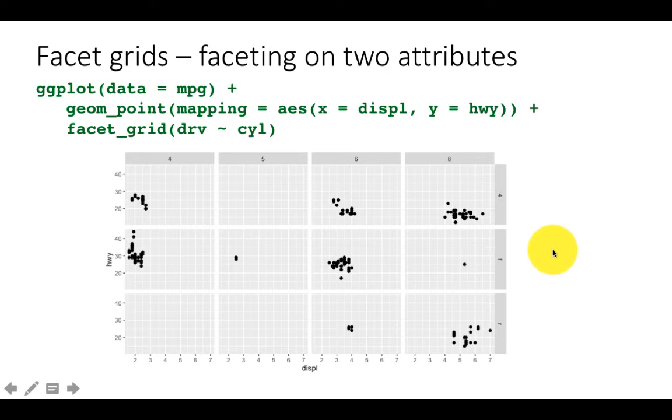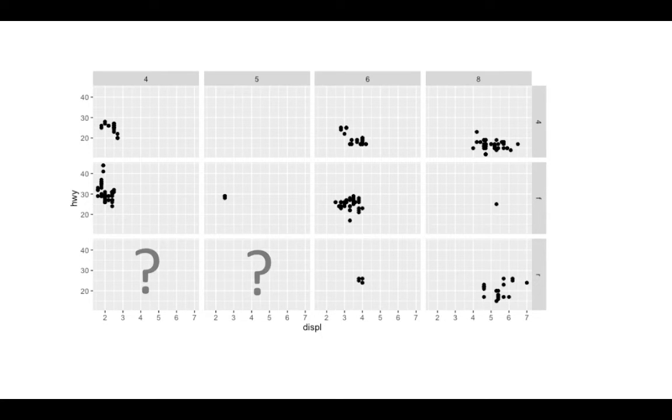It's also very powerful. Now, the difference between doing a facet wrap with two variables and a facet grid is that the facet grid is a lot easier to read. So for example, this graph is for four-cylinder four-wheel drive. This graph is for a six-cylinder front-wheel drive and so on. So it makes it just a little bit more easy to read, very logical organization. So you can do faceting on two attributes using facet grid.